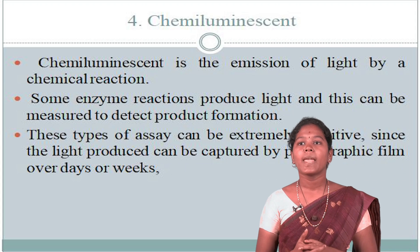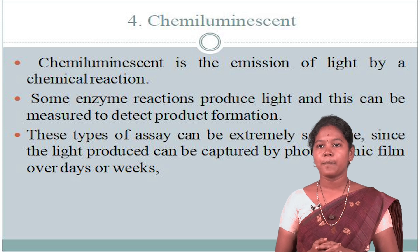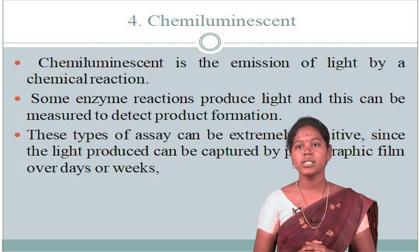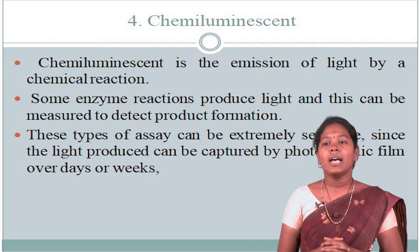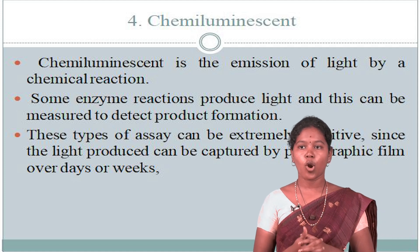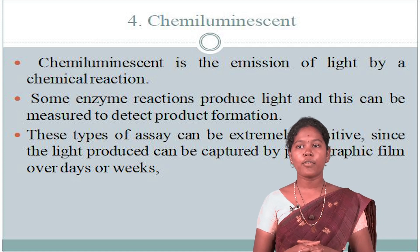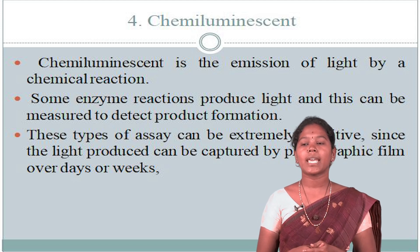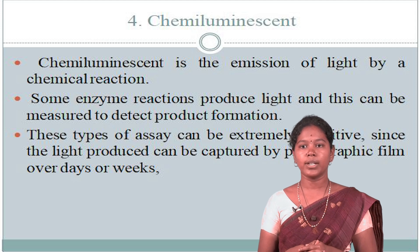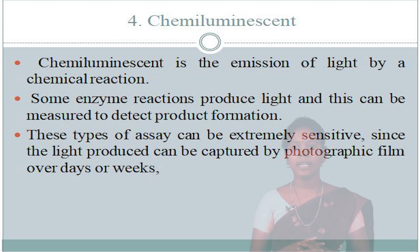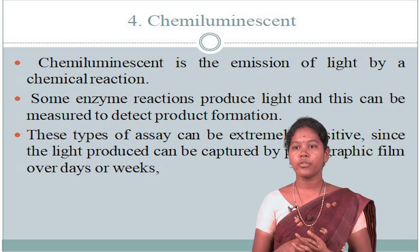The fourth method is the chemiluminescent assay. Chemiluminescence is the emission of light by a chemical reaction. Some enzyme reactions produce light, and this can be measured to detect product formation. This type of assay can be extremely sensitive since the light produced can be captured by photographic film over days or weeks, but it can be hard to quantify because not all the light released by a reaction will be detected.